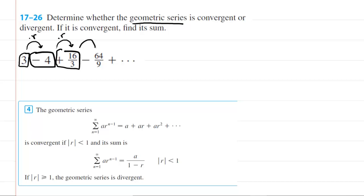We would take 16 thirds and multiply it again by the common ratio, r, and that would give us negative 64 ninths, and we would keep doing this infinitely many times. And the question is, well, if we did this infinitely many times and added them all together, would we get a finite result or would we get an infinite result?